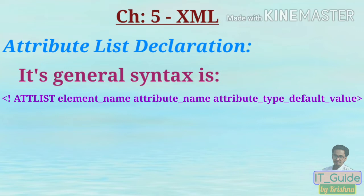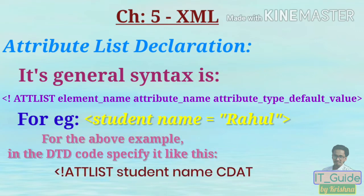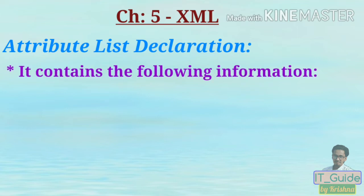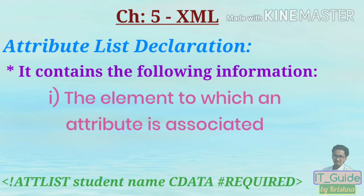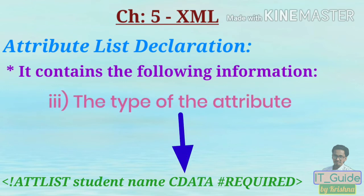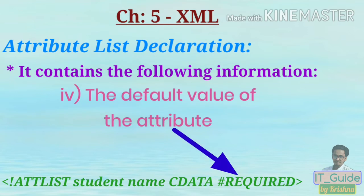Afterwards you need to specify the type and the default value. For example, suppose you want to create this element where 'name' is the attribute — in the DTD code we specify it like this. The attribute list declaration contains: (1) the element to which the attribute is associated, (2) the name of the attribute, (3) the type of the attribute, and (4) the default value of the attribute.